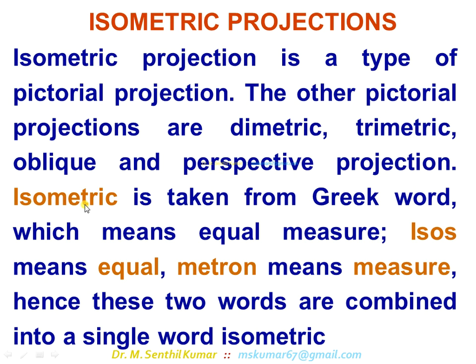Isometric is taken from the Greek word which means equal measure. Isos means equal, metron means measure. Hence, these two words are combined into a single word called isometric.